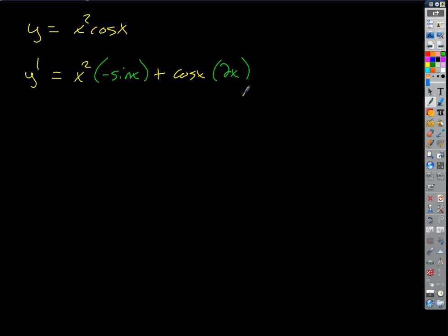x squared times negative sine x. Okay, and so if we were going to write that in simplest form, what would you do? I mean that's the answer, but just to clean it up. How do you write, like for example, this second term?